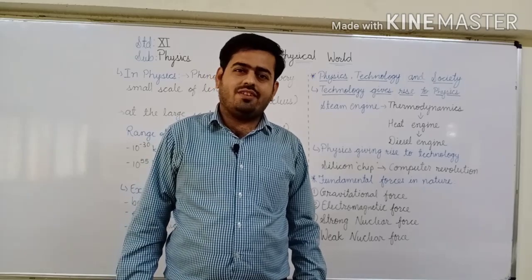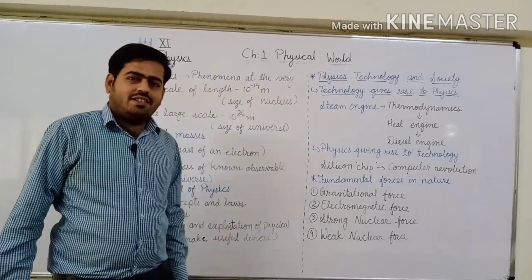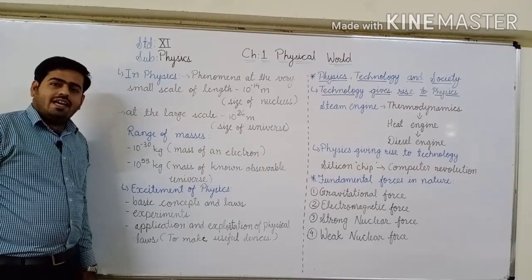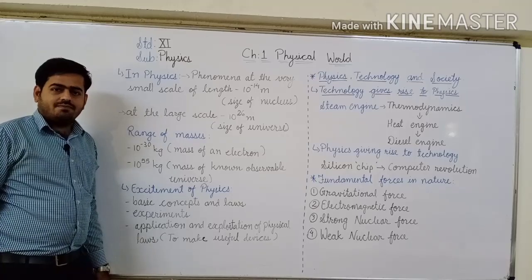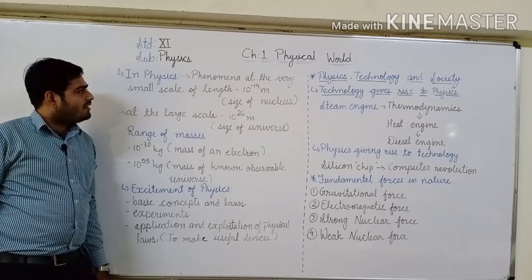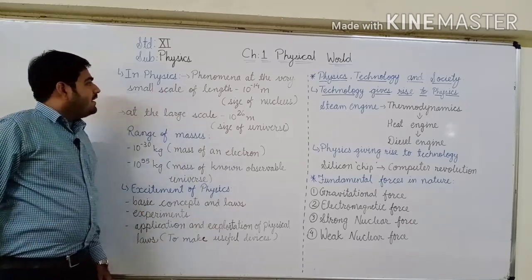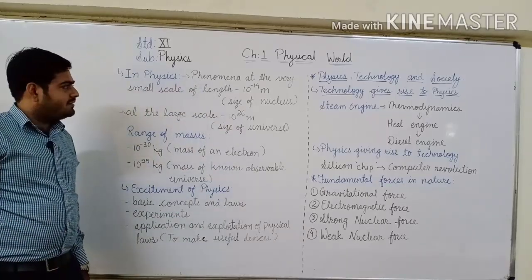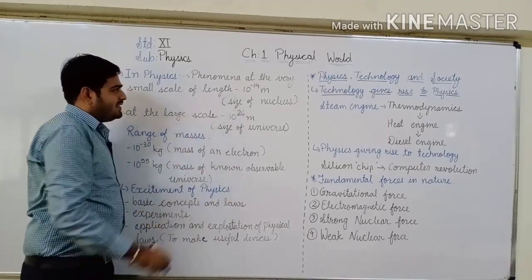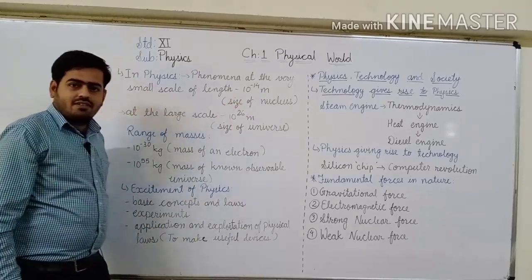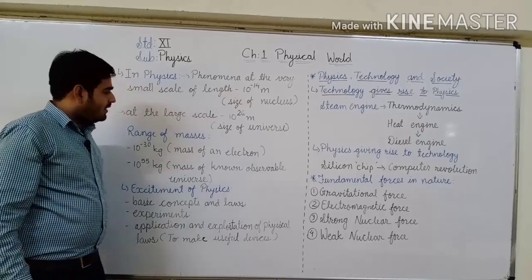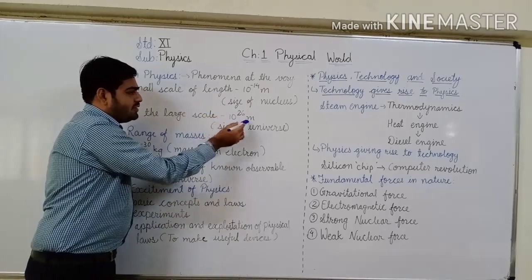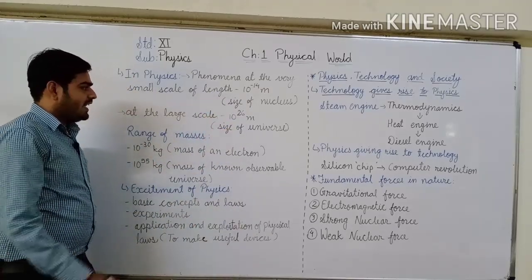Hello my dear students, I am Deepak Vanjani. Let us continue with chapter number one, Physical World. Last time we discussed about classical physics and quantum physics. In physics, when we discuss phenomena at a very small scale, the smallest length we can measure is 10 raised to minus 14 meter, which is the size of the nucleus. At large scale, the large value of length is 10 raised to 26 meter, which is the size of the universe.